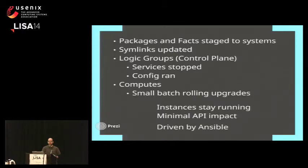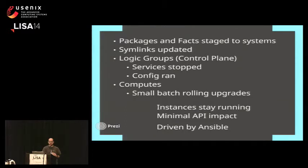While this upgrade is happening, instances that are running do not stop. They continue to run, respond to the network, and do the work a customer has them doing. The only thing affected is the OpenStack API that clients may be wanting to use to manipulate those resources. But by rolling through logical groups and API units one at a time, we're able to very minimally impact the API. All of this is driven by Ansible — our orchestration of choice — which gives us the freedom to order our actions in a clear and logical way, roll batch sizes very easily, and just works very well for us.